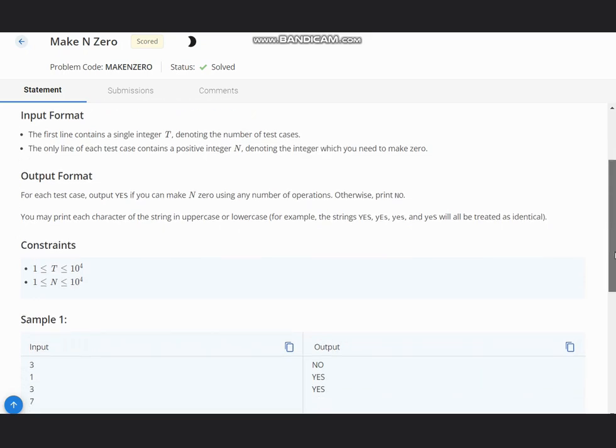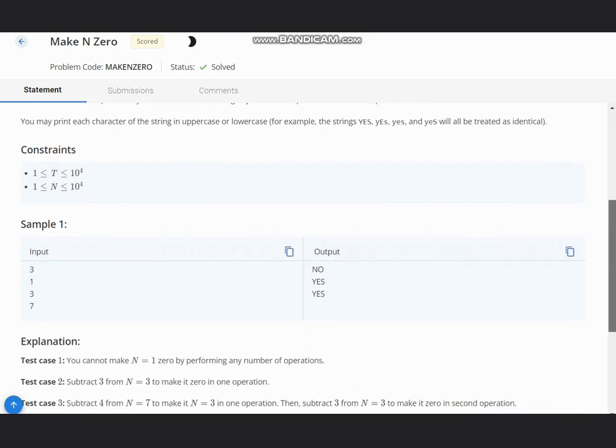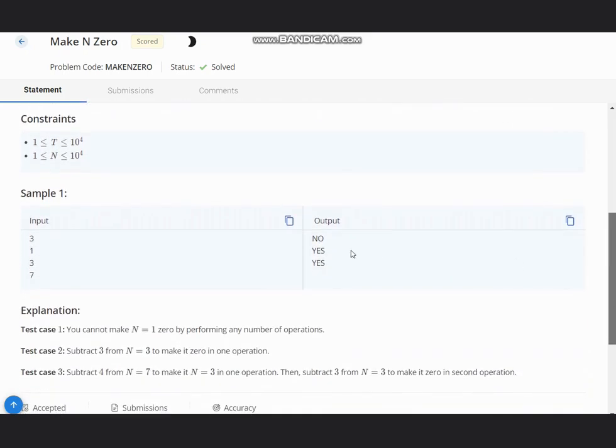You can print YES or NO in uppercase or lowercase. For the first test case, N equals 1. We can do these two operations: N minus 3 or N minus 4 any number of times. Since 1 is less than 3 and 4 both, we simply output NO in this case.